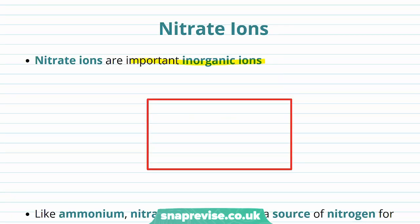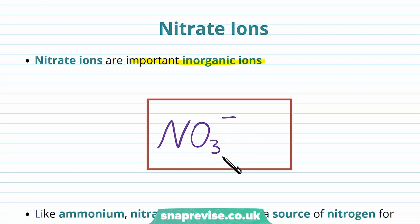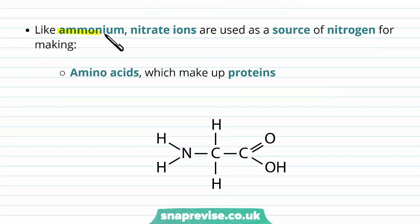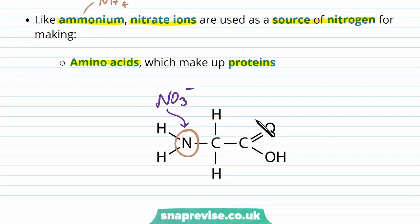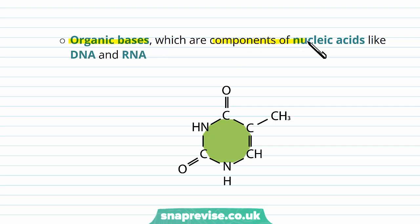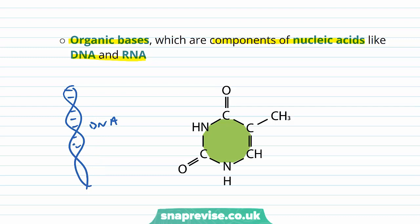Nitrate ions are another important inorganic ion. The formula is NO3 minus — so it's nitrogen with three oxygens and one minus charge overall. This can confuse people because it's not three minus; it's NO3, and then the whole thing has a minus charge. Because it's a negative charge, this is a type of anion. Like ammonium (NH4+), nitrate ions are a good source of nitrogen for various organisms. Nitrogen is used for making particular molecules like amino acids, which are the building blocks of proteins. Looking at an amino acid, we can see nitrogen is present, and so we can use nitrate to derive this nitrogen. We also use nitrogen in making organic bases, which are components of nucleic acids like DNA and RNA, which contain genetic information. We need this nitrogen, either from ammonium or in this case from nitrate.